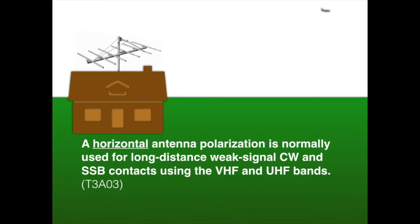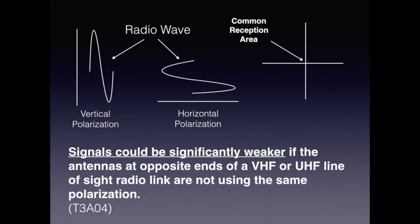Data and CW tend to work best for weak signal operations. The vast majority of operators use horizontal polarization for CW and single sideband operations in the VHF and UHF bands. Using vertical polarization is likely to limit your ability to make contacts, especially at a distance. For the exam, horizontal antenna polarization is normally used for long distance weak signal CW and single sideband contacts using the VHF and UHF bands. Signals could be significantly weaker if the antennas at opposite ends of a VHF or UHF line-of-sight radio link are not using the same polarization.